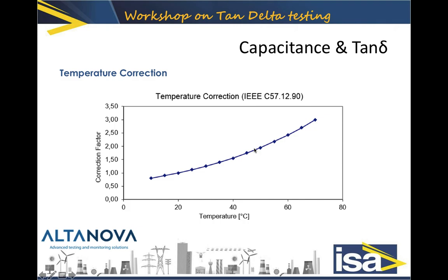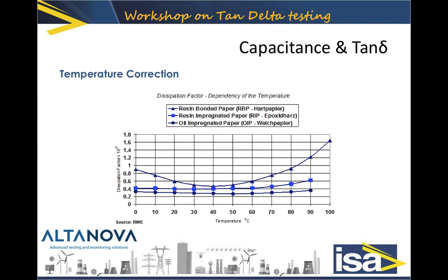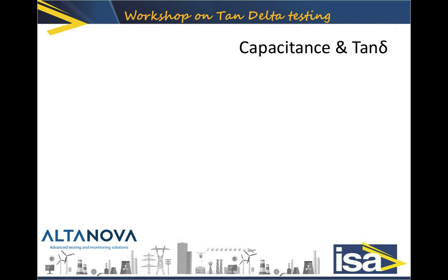When talking about bushings, there are three major types: resin bonded paper (RBP), resin impregnated paper (RIP), and oil impregnated paper (OIP). The temperature correction for bushings looks a little different for each type, as shown on this table.